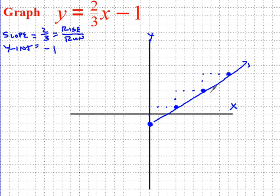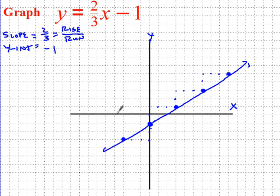I can also go backwards. Because I went up and to the right, if I want to maintain the same line I can go down 2 and then left 3. This is a positive slope, so the line should be going uphill from left to right — and it is. So I have a y-intercept of negative 1 and a slope of two-thirds.